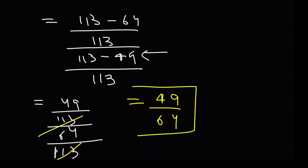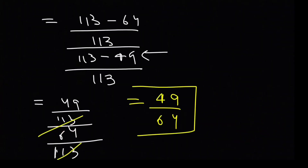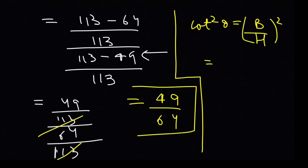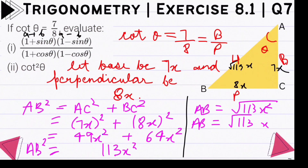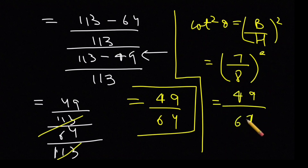I hope aapko yeh samaj aaya. Second part bhoat easy hai — cot²θ karna hai. Cot = B by P, so cot²θ = (7/8)² — aur yeh question mein given bhi tha. So (7/8)² = 49 by 64. Dekho, answer same hai — first part ka bhi aur second part ka bhi 49/64.